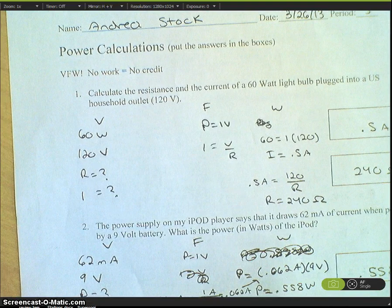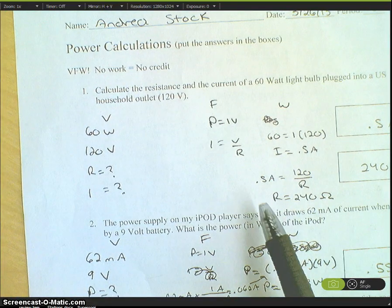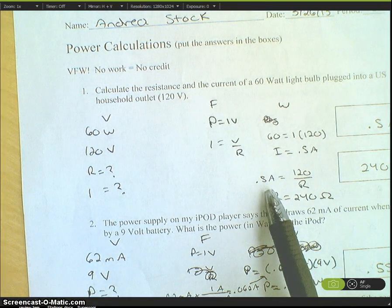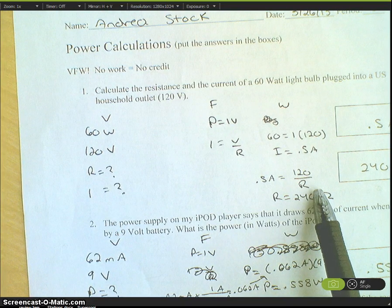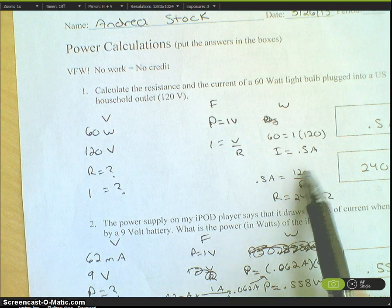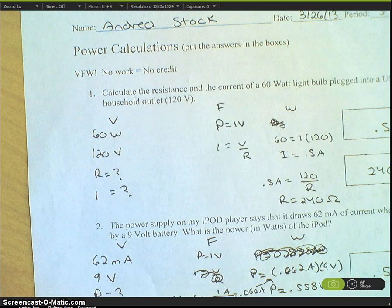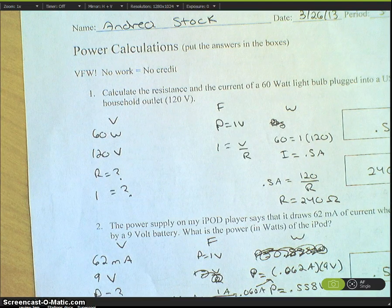Then for resistance, I plugged in the 0.5 for I, which equals 120 over resistance. Once you divide 120 by 0.5, you get 240 ohms for your resistance.